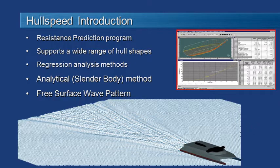Hull Speed is a general purpose resistance prediction program. It supports a wide range of hull shapes by using two different approaches. The first is a series of regression analysis methods based on tank testing. We also have an analytical or slender body method, a technique based on first principles of potential flow. The advantage of the second method is it also allows us to calculate the free surface wave pattern, as shown in the picture at the bottom of the screen.